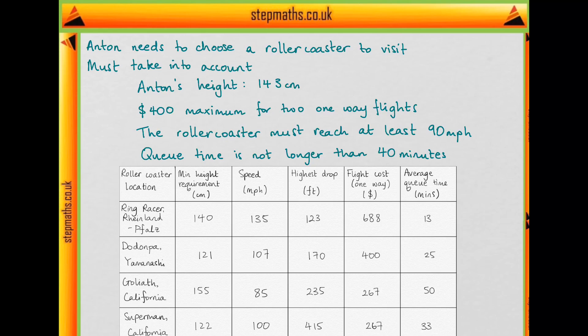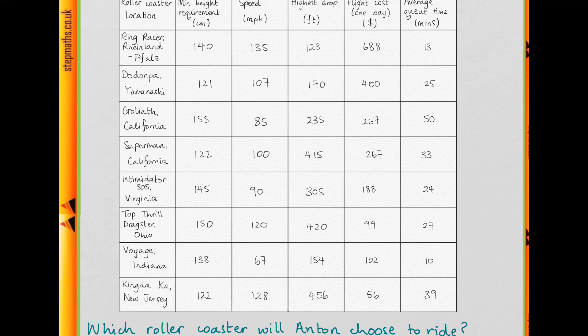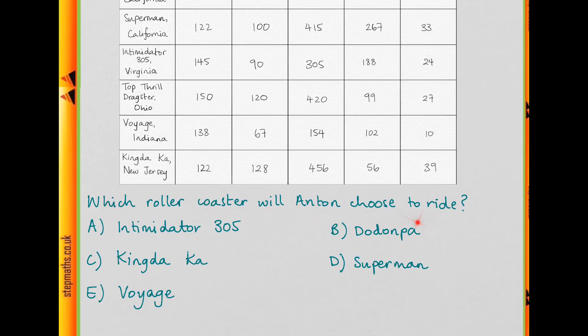For this question, Anton wants to ride one of the top 8 roller coasters in the world for his birthday. We're given points that we must take into account when he's choosing the roller coaster, and we're also given a table of data about the roller coasters. We want to know which roller coaster he's going to choose.